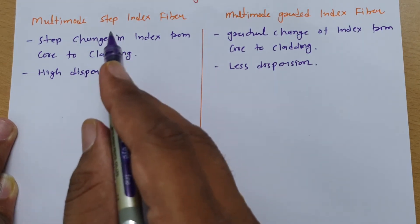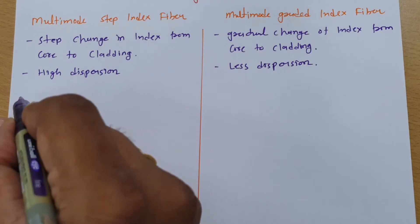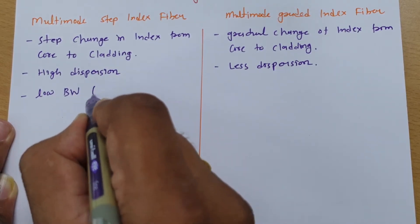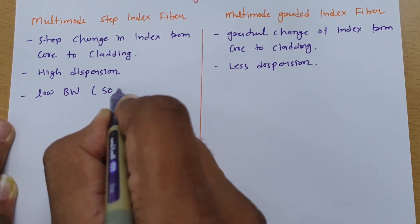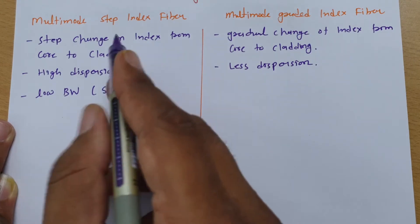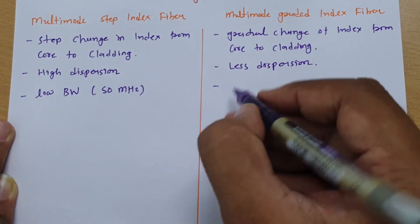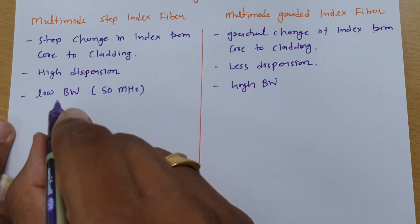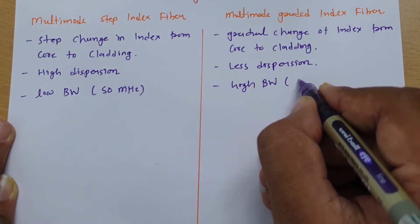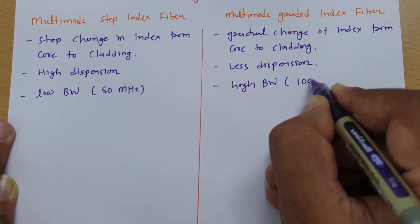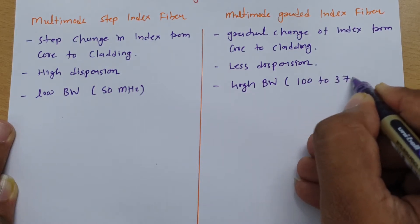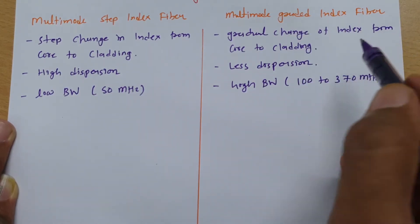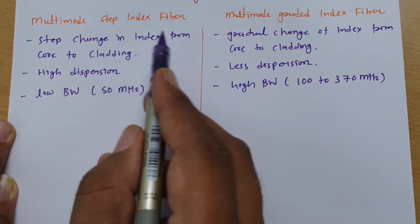If I compare these fibres in terms of bandwidth, you will find bandwidth is low in case of Step Index Fibre. Usually bandwidth is bounded up to 50 MHz in case of Multi-mode Step Index, while in case of Multi-mode Graded Index, bandwidth is relatively high compared to Multi-mode Step Index Fibre.